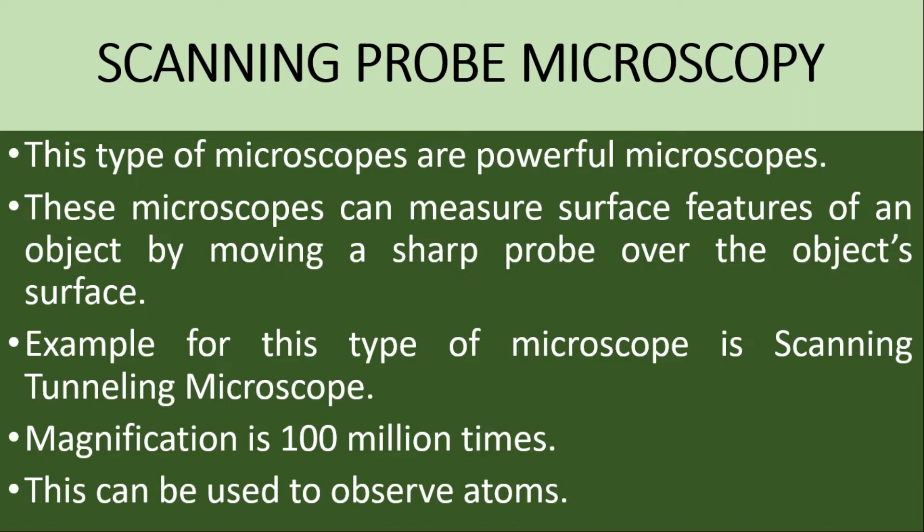Scanning probe microscopy: these are powerful microscopes that can measure surface features of an object by moving a sharp probe over the object surface. The peculiarity is that there is a probe — that's why it is called scanning probe microscopy. That probe or projection helps to observe particular specimens or cells.